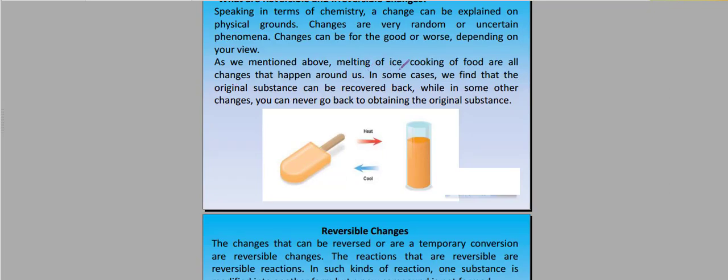As we mentioned, melting of ice, cooking of food are changes that happen around us. In some cases we find that the original substance can be recovered back. If you put ice cream out or heat it, then the liquid will change the form. While in some other changes, you can never go back to obtaining the original substance.